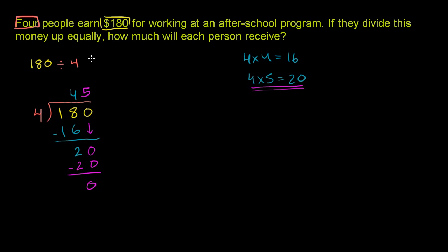So 180 divided by 4 is equal to 45. So if these four people were to split the money equally, they'll each get $45.